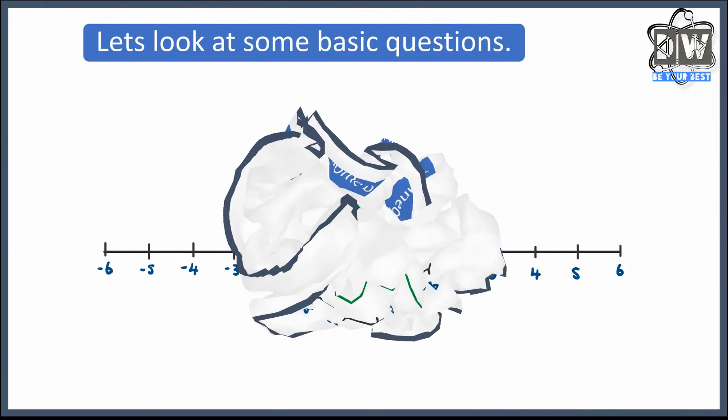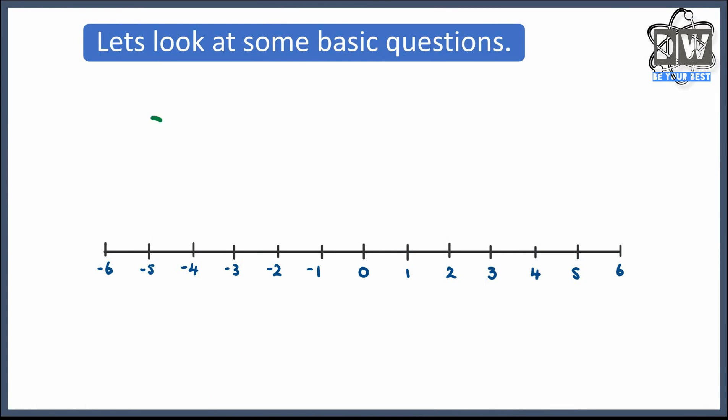Give the next one a go. So we've got x is bigger than or equal to 0. Your starting point is 0. Now it's shaded in because it's equal to. Which direction do you go — left or right? You're going to go right because x is bigger than or equal to 0, so it goes to 1, 2, 3, 4, 5, 6, 7 and past that point.